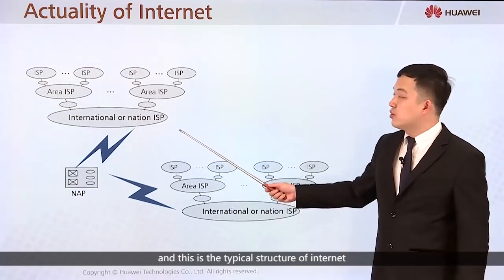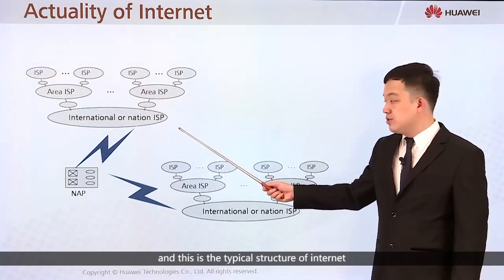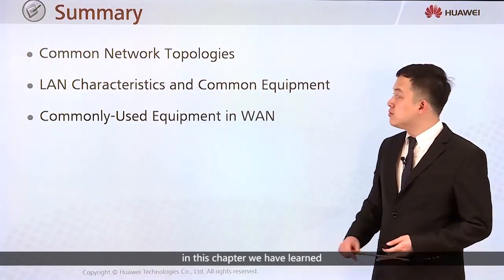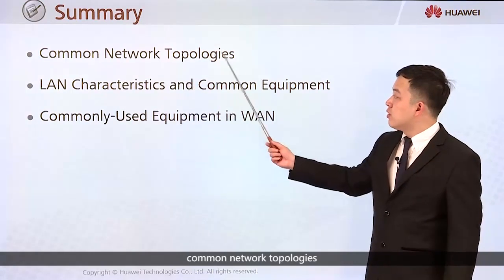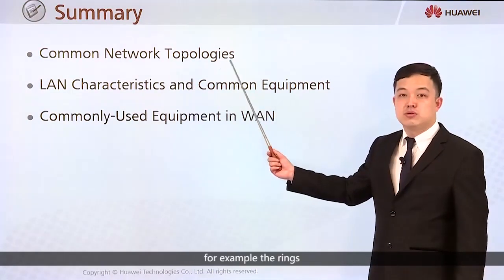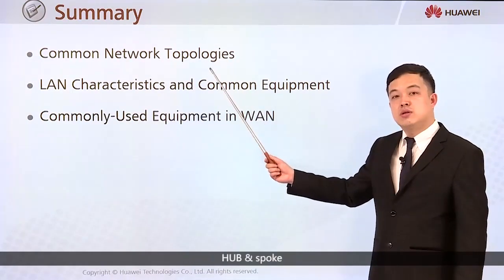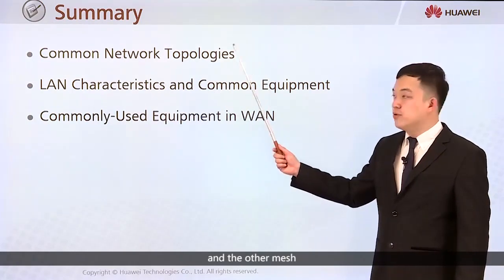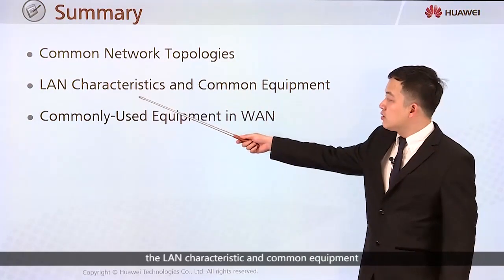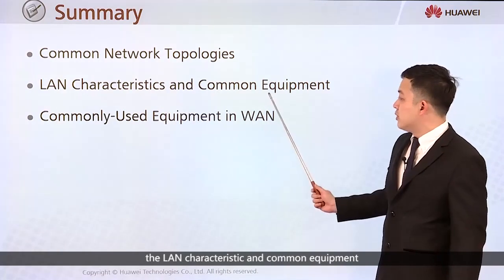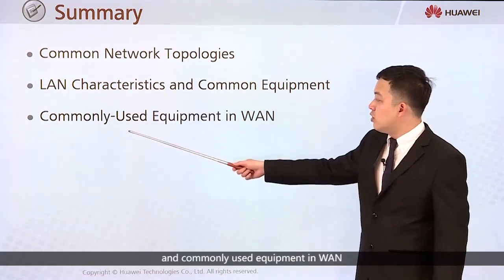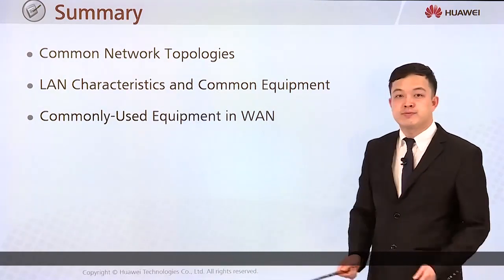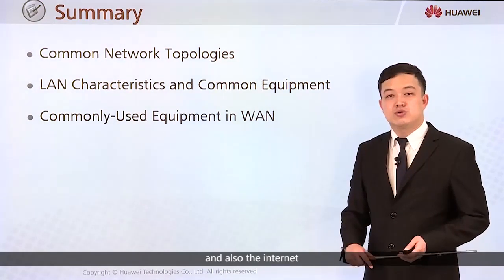In this chapter we have learned common network topologies — for example, ring, hub-and-spoke, mesh, and others. We also covered LAN characteristics and common LAN equipment, commonly used WAN equipment, and the internet structure.